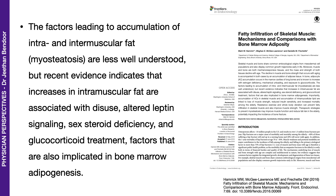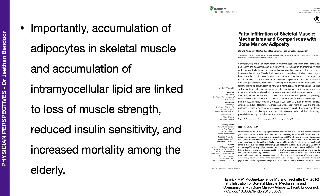These are factors that are also implicated in bone marrow adipogenesis. Accumulation of adipocytes in skeletal muscle and accumulation of intra-myocellular lipid or fat are linked to loss of muscle strength, reduced insulin sensitivity, and increased mortality among the elderly.